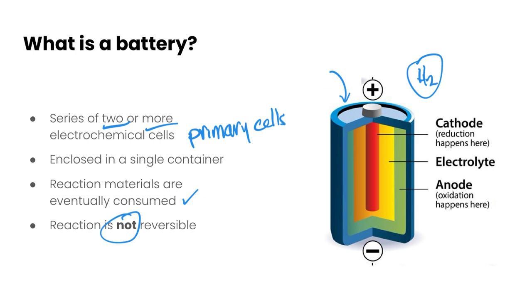So that means primary cells are really good for low current demands only. They don't really work well for high current demands like flash photography or electric cars and so we need something different in order to work with those things.